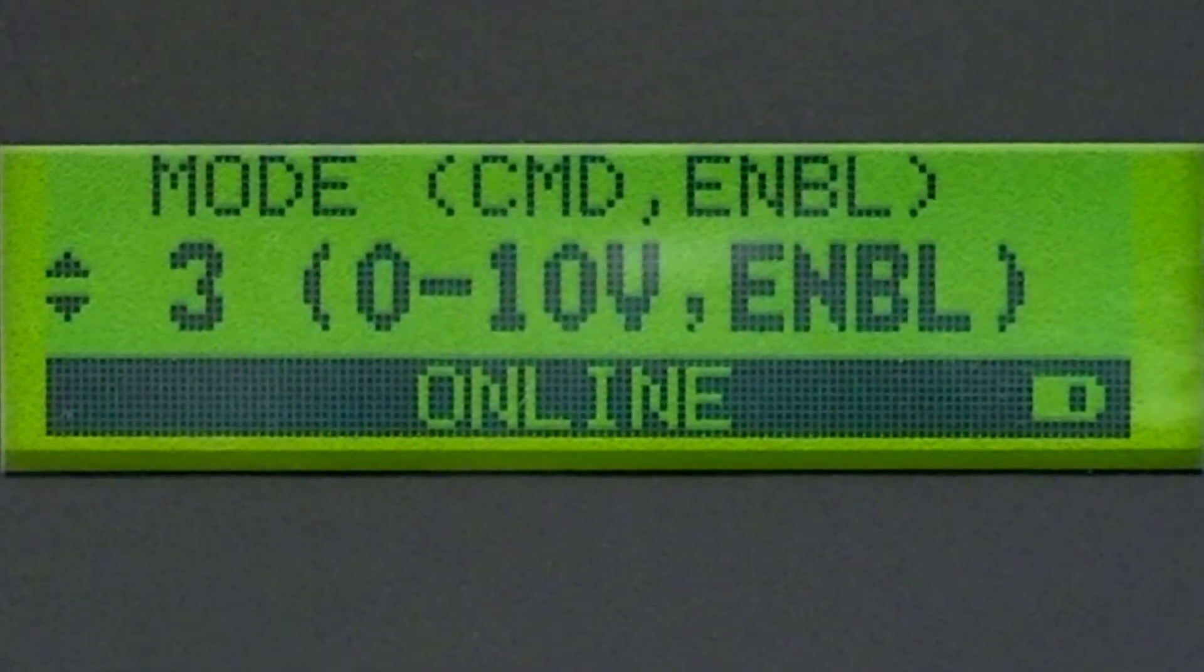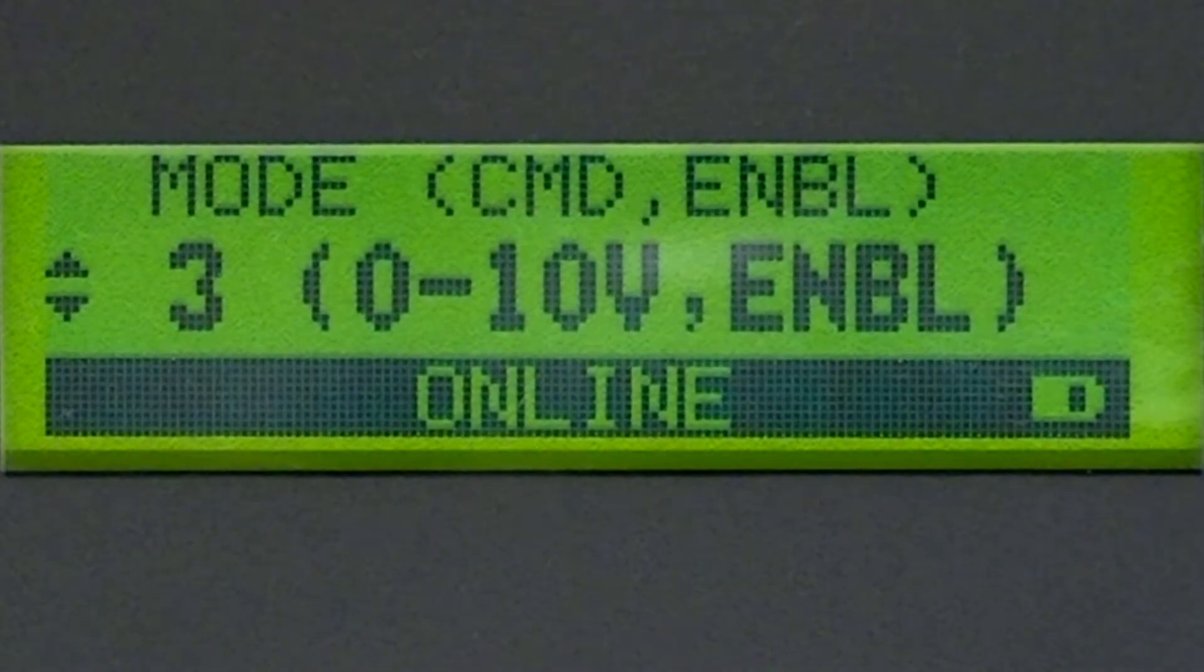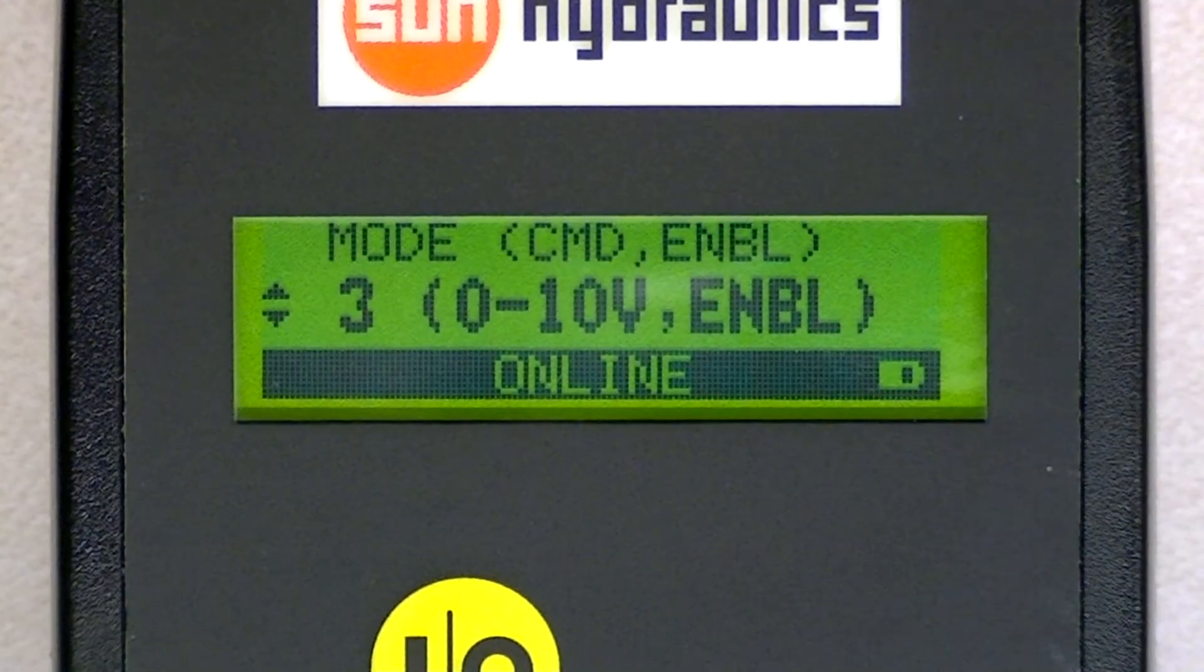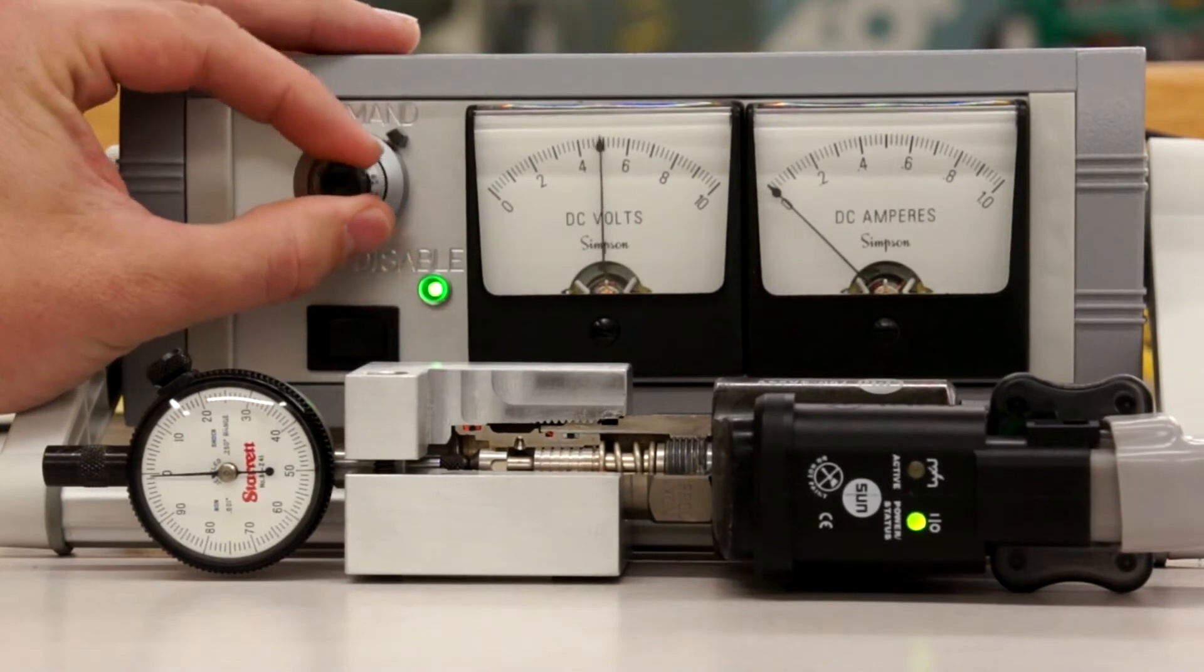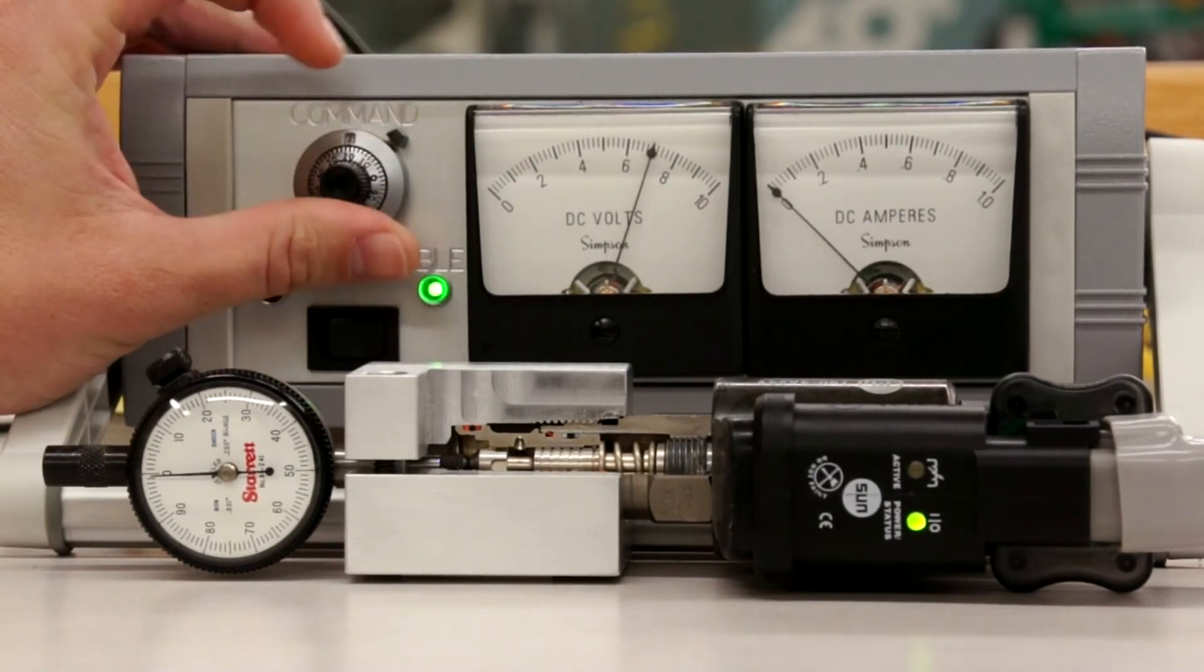The next mode is mode 3. In mode 3, you can sweep the input from 0 to 10 volts, but the enable function is now active. So as you sweep the input from 0 to 10 volts, the amplifier will do nothing unless the enable switch is turned on.